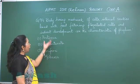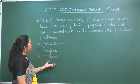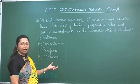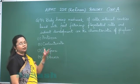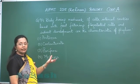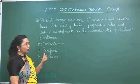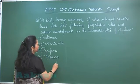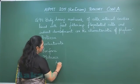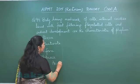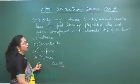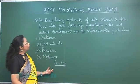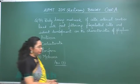Out of the four options, only Porifera has a cell aggregate plan and the characteristic cells called choanocytes. So the answer is option 3, that is Porifera. Moving on to question 95.